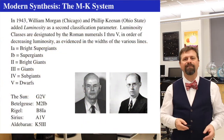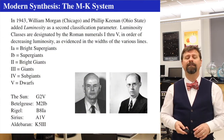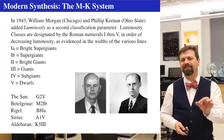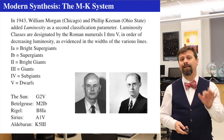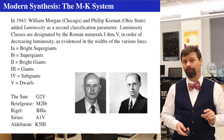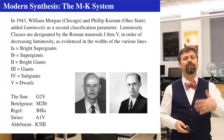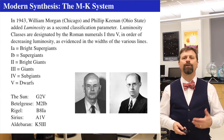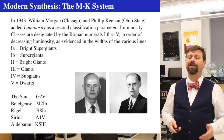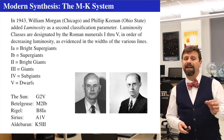Going back to 1943: Morgan and Keenan added a second level to the spectral classification system. They discovered that two stellar spectra could have exactly the same absorption features, except that one set of absorption lines was wider than the others — different widths of lines for exactly the same temperatures. They classified stars into six general groups: supergiants, bright giants, giants, subgiants, and dwarfs — based on the widths of the lines.